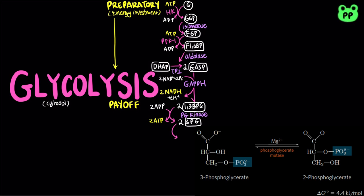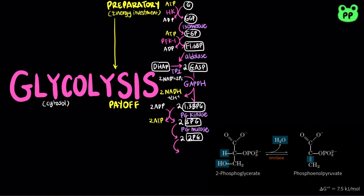Next, the enzyme phosphoglycerate mutase catalyzes the intramolecular transfer of a phosphoryl group from carbon-3 to carbon-2 of glycerate, producing 2-phosphoglycerate. Next, the enzyme enolase catalyzes the reversible removal of a water molecule from 2-phosphoglycerate, producing phosphoenolpyruvate.